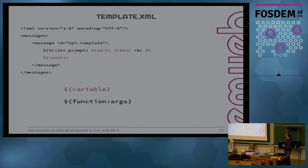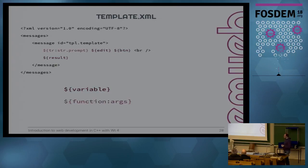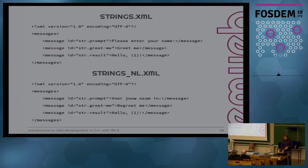The template.xml file contains something like this: you have a messages outer tag, then you define different messages. We'll call this one tpl.templates — this is just a convention I'm using. You can call it anything. You'll see edit, btn, and results — those are variables we'll populate later. There's also a special one that's a function call which calls the tr() function with str.prompt as an argument. The strings.xml file is the same kind of file — it also has a messages tag, and you define all your translations there.